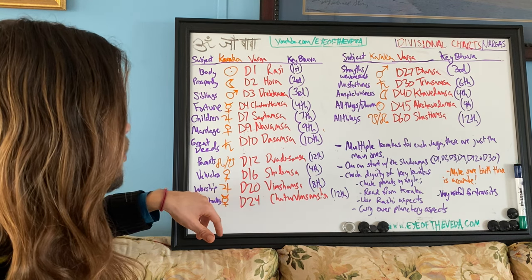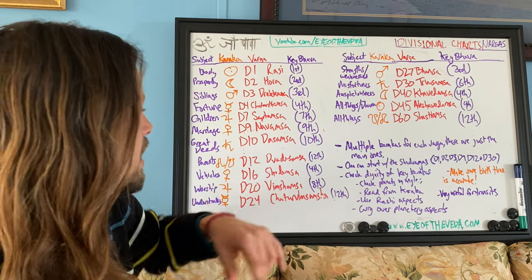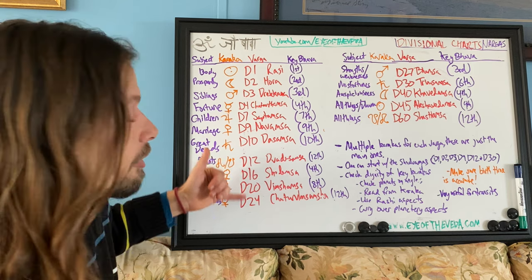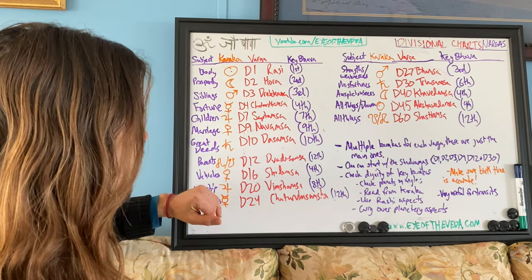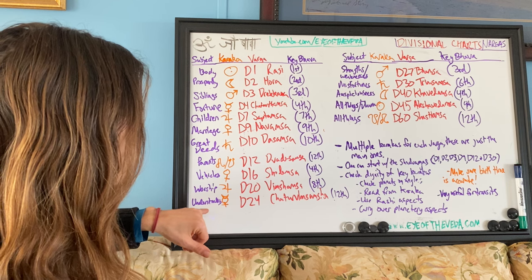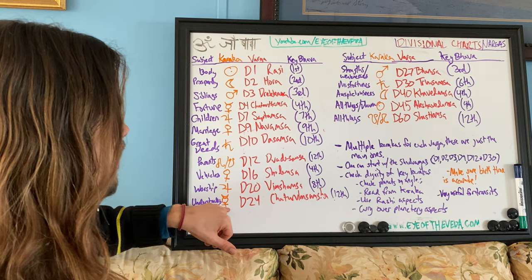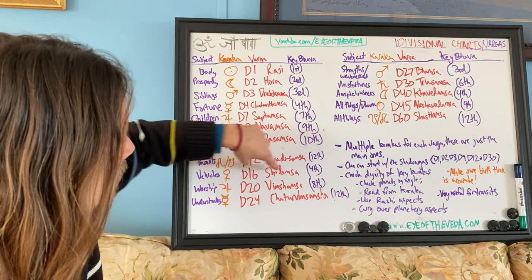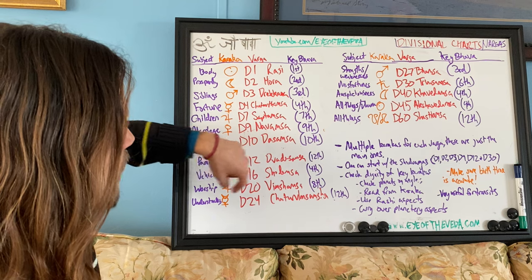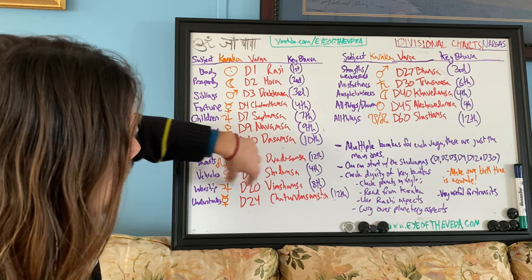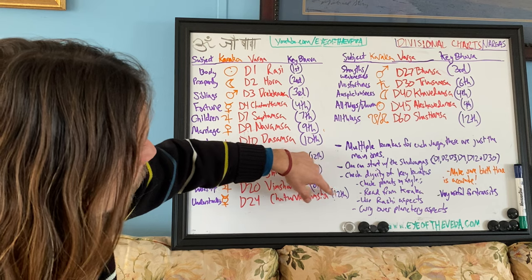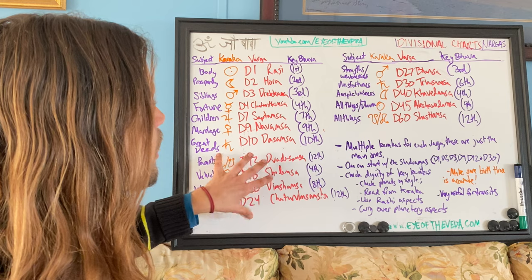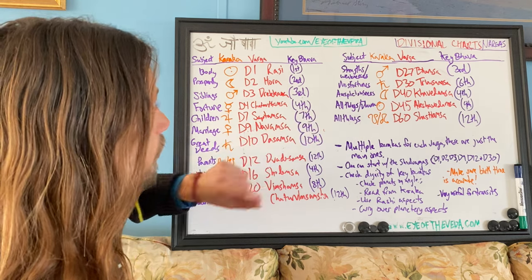The D20 is the Varga of worship — look at Jupiter and the eighth bhava. The D24 is the Varga of understanding, wisdom, and siddhi. These are very internal Vargas. D16 symbolizes your external vehicles, D20 is what you devote yourself to inwardly, and D24 is your internal intellect and understanding — more left-brain reasoning. These are really important for spiritual growth.